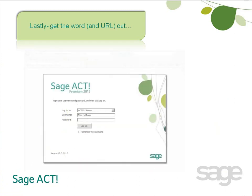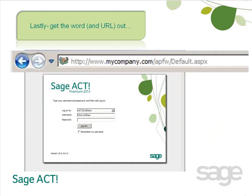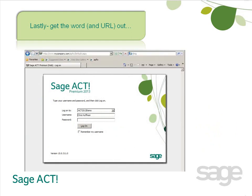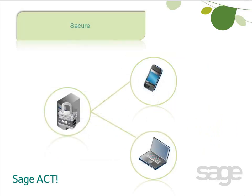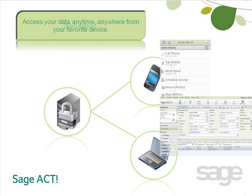The last step is to share the connection information with your remote users so they can begin connecting and working in the database. As you have learned, you can set up Sajak Premium Access via Web in your network with a few additional steps. Administrators gain the benefits of centralized and secure storage of data, while remote users benefit from anytime, anywhere access from a wide range of devices.